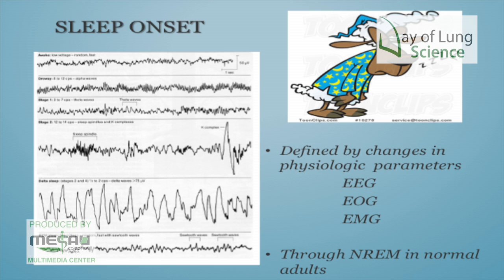You have EEG — electroencephalogram. EOG — electrooculogram — tells you when you're in REM because your eyes move rapidly left to right; a small sensor can detect this eye movement. EMG — electromyogram — measures muscle movement and is attached to the legs to detect periodic leg movements.